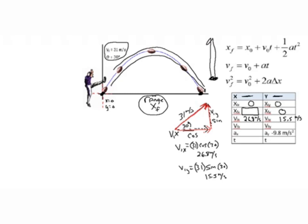For final velocity in the x direction: once the football player kicks the ball, that's the only force in the x direction, so there are no other forces and acceleration in the x direction is zero — neglecting air resistance. Therefore, final velocity in x equals initial velocity in x, which is 26.8 meters per second. For v final in the y direction, we don't know that yet, and we don't really need it in this case.